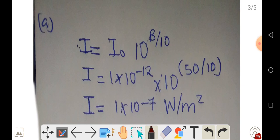Intensity, represented by I, is equal to I₀, which is the threshold of hearing, multiplied by 10 to the power decibel over 10. The threshold of hearing is 1.0 times 10 to the power negative 12.